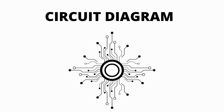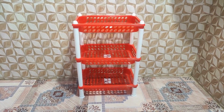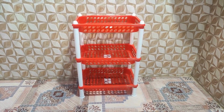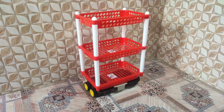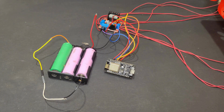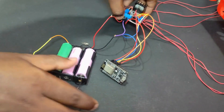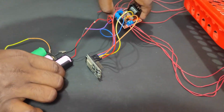Circuit diagram. This is the circuit for our personal robot. Now, add a grocery item stand like this on top of our base. Put the circuit inside that stand like this.